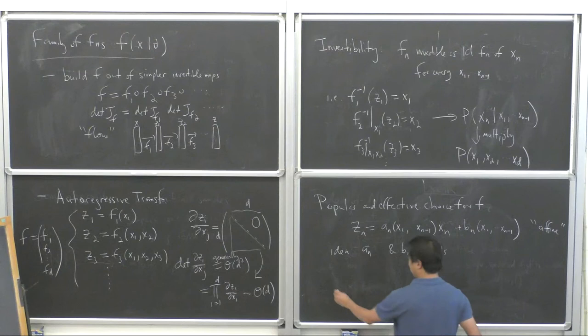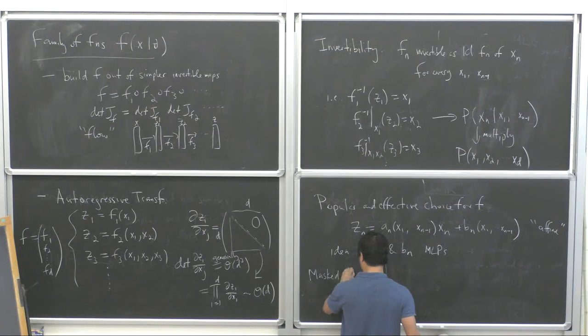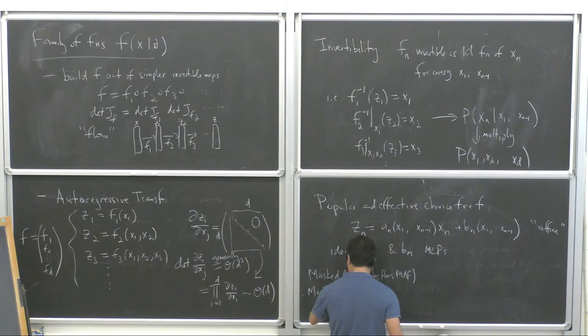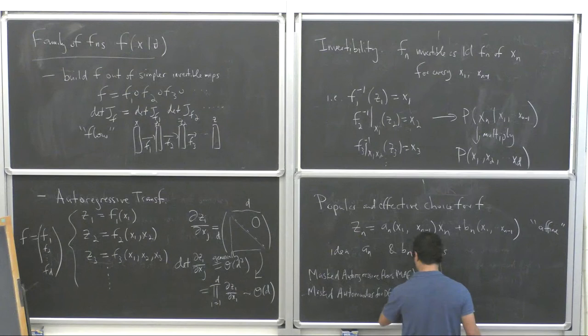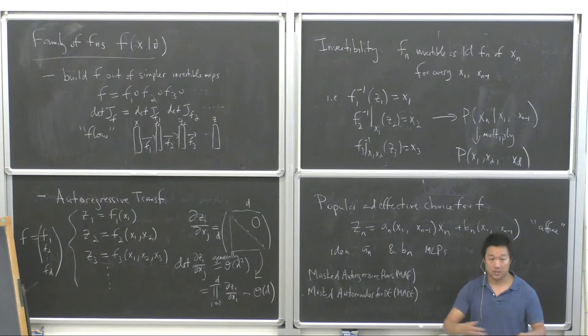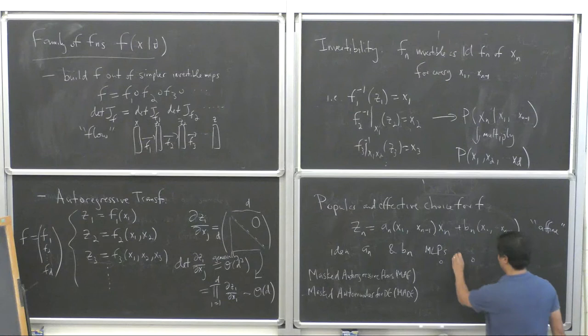Some people invented what's called the masked autoregressive flow (MAF). They also invented the masked autoencoder for density estimation (MADE). Rather than computing these coefficients one at a time, the key idea is to make them all into one vector output of a single neural network — taking the X's as input and outputting all the A's and B's — while preserving the autoregressive structure.